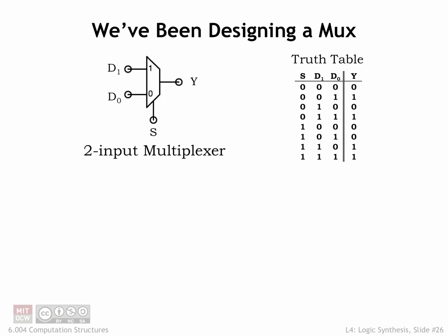The truth table we've been using as an example describes a very useful combinational device called a 2-to-1 multiplexer. A multiplexer, or MUX for short, selects one of its two input values as the output value. When the select input marked with an S in the diagram is 0, the value on data input D0 becomes the value of the Y output. When S is 1, the value of data input D1 is selected as the Y output value.